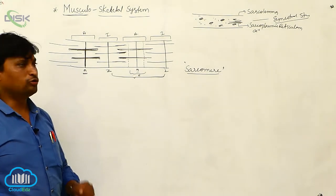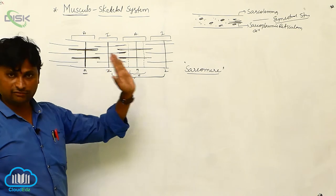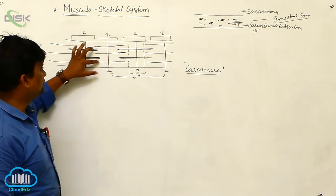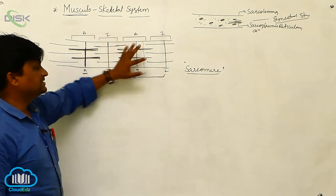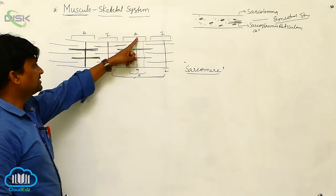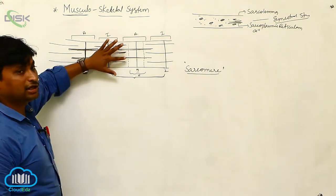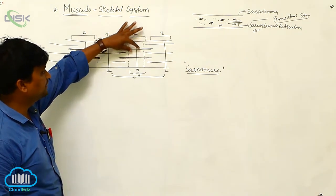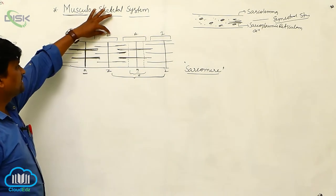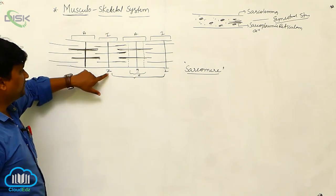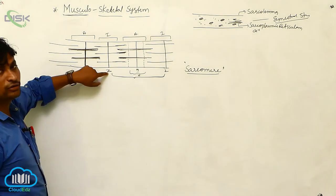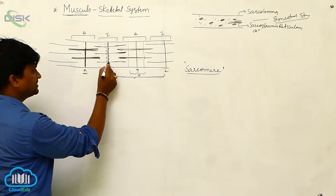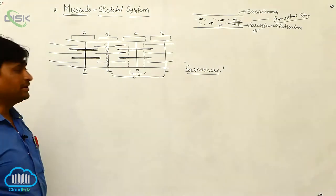In the ultrastructure of the sarcomere, A and I bands alternate. There are two types of filaments: thin filaments called actin filaments, and dark thick filaments called myosin filaments. The A band contains both light and dark filaments. In the center of the I band is the Z line, which under electron micrograph shows a zigzag-like structure — that is why we call it the Z line, also known as the cruces line and Dobi's membrane.